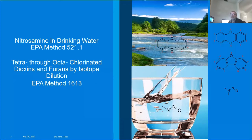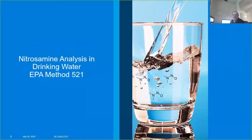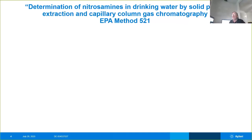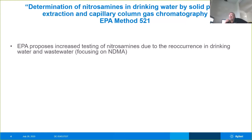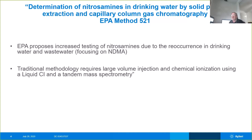The first method I'd like to discuss today is the nitrosamines analysis in drinking water, Method 521 — the determination of nitrosamines in drinking water by solid phase extraction and capillary column gas chromatography. The EPA has proposed increased testing for nitrosamines due to their reoccurrence in drinking water and wastewater, and we're going to focus today on NDMA. We use traditional methodology that requires large volume injections and chemical ionization and the use of liquid CI in a tandem mass spectrometer.